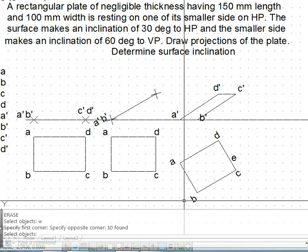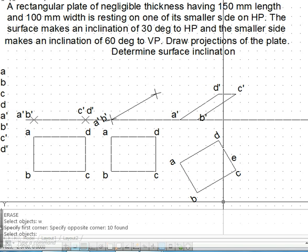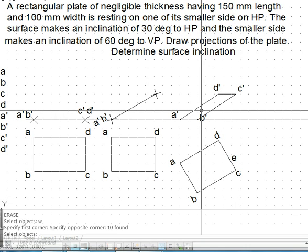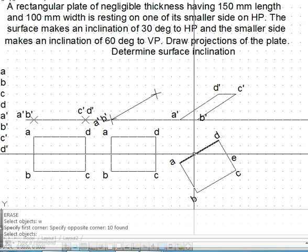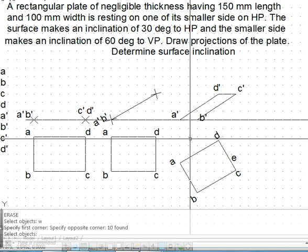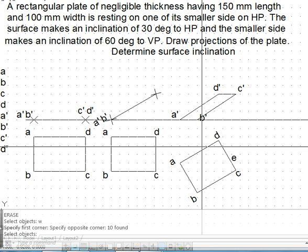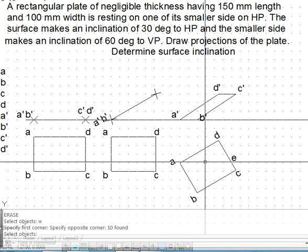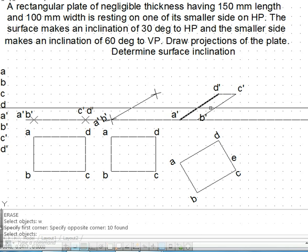The procedure is: first identify a true length in the other view. If we want the line view in top view, we would identify a true length in the front view. The true length property is if some line in the front view can be classified as true length, then its top view must be parallel to XY line.